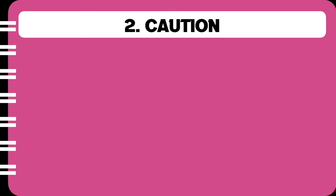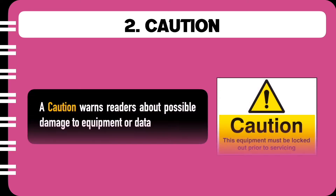Moving to the second special notice, which is a caution. A caution warns the readers about possible damage to the equipment or to your data. Here is an example. Please note that it is colour coded in yellow.